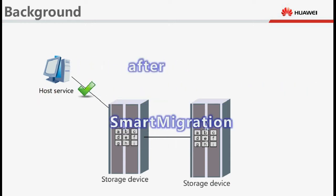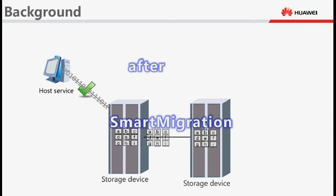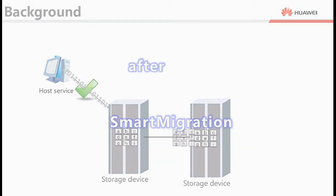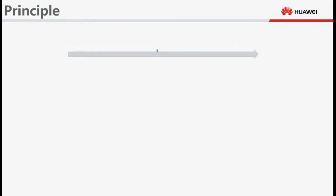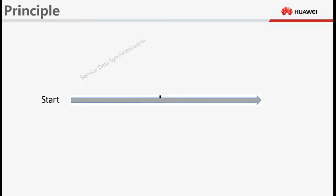Smart Migration copies all data from the source LUN to the target LUN without interrupting host services and enables the target LUN to completely replace the source LUN. Based on the implementation process, Smart Migration covers two phases: Service Data Synchronization and LUN Information Exchange.